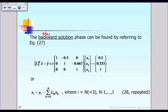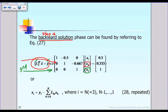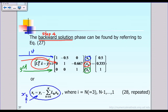Step four is the backward solution phase. The equation is L transpose times X equal to Y. The matrix L is known from step one and vector Y from step three. We look at equation three first to solve for x3, then the second equation for x2, and finally the first equation for x1. In general, we solve for x3, then x2, then x1 using the formula shown in equation 28.